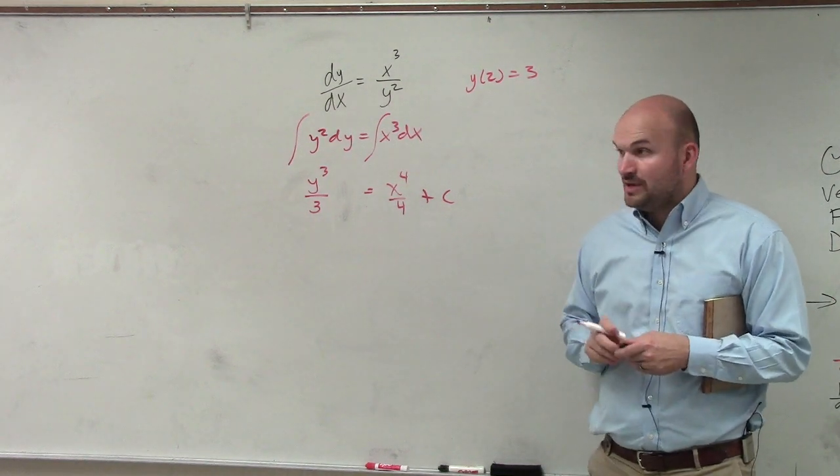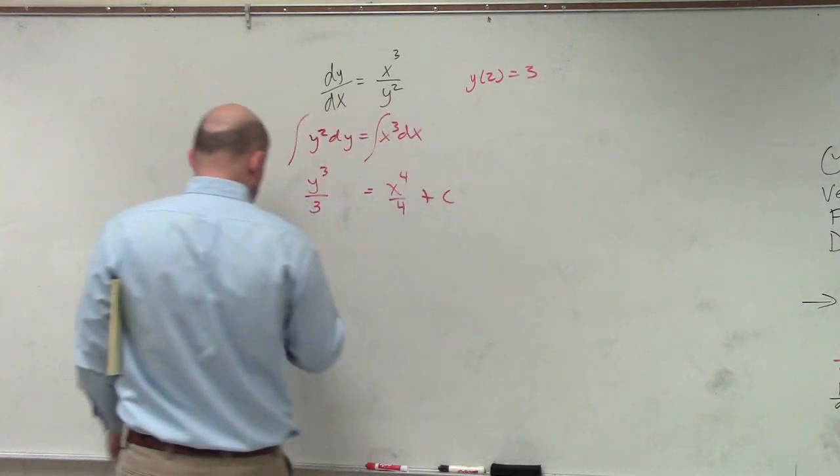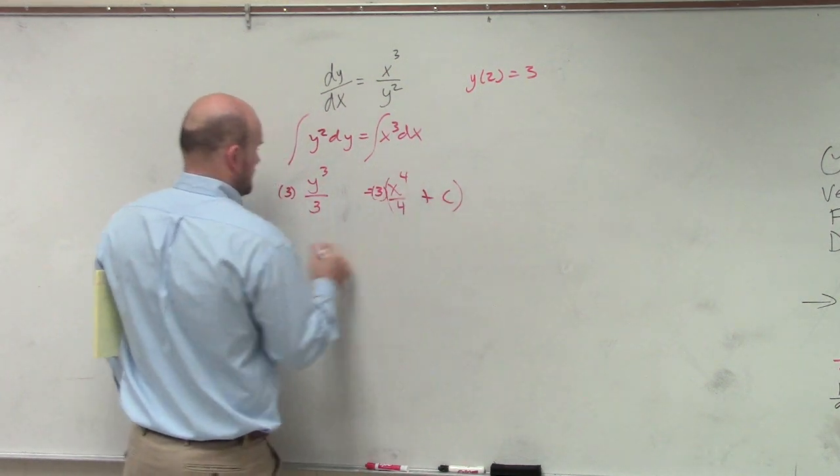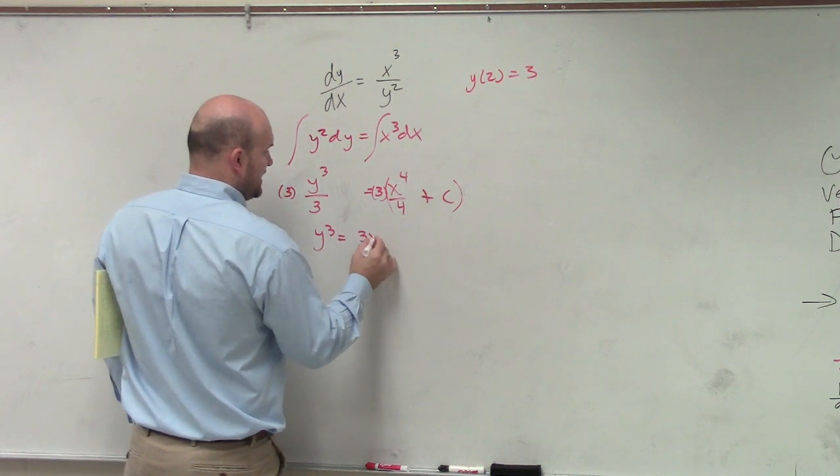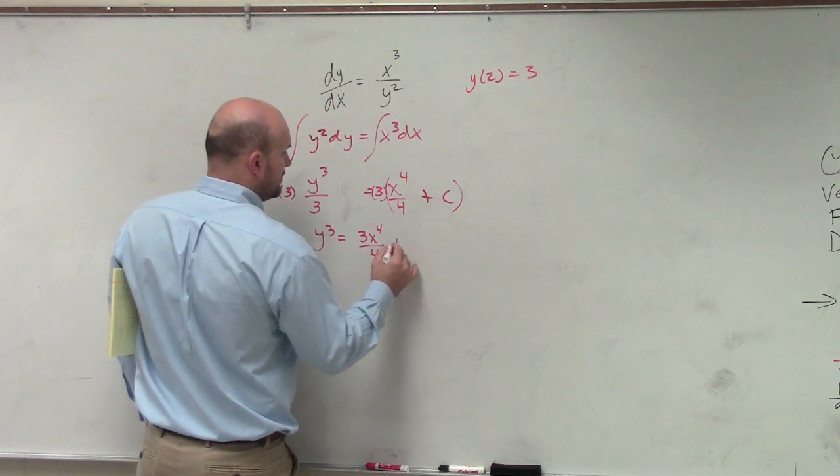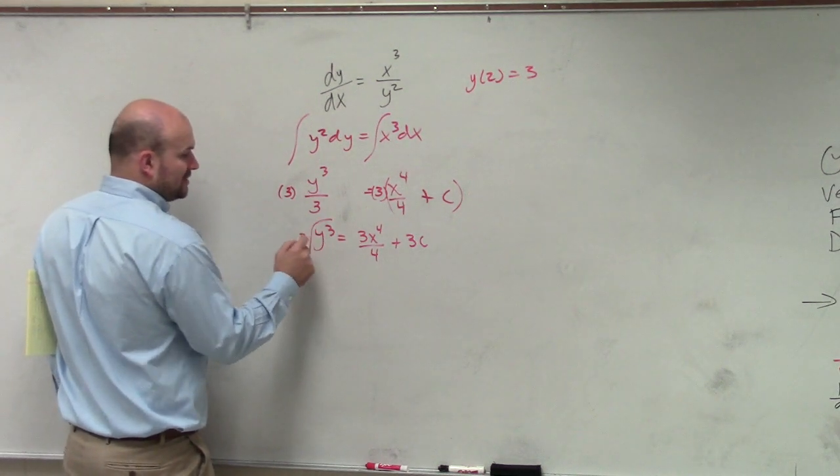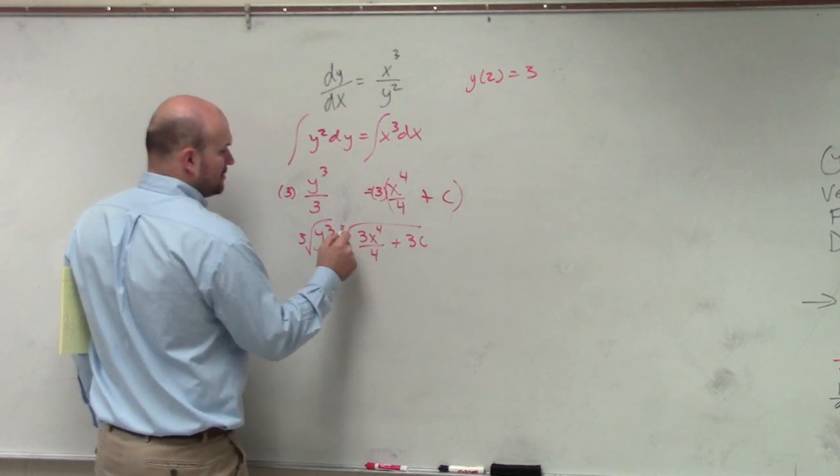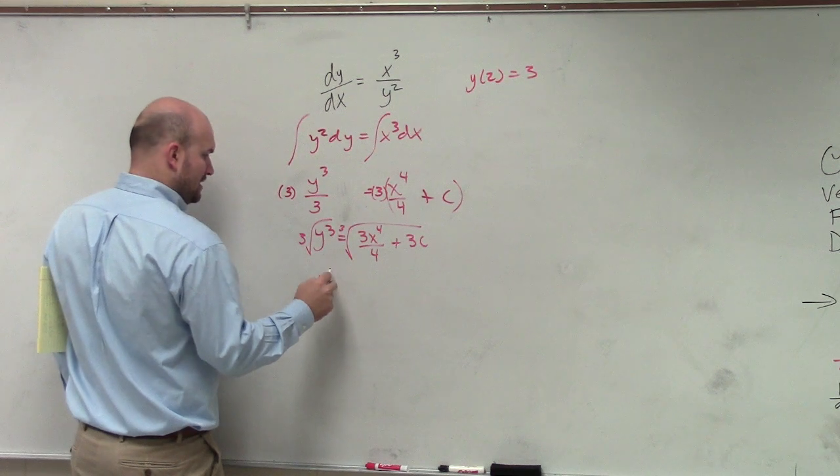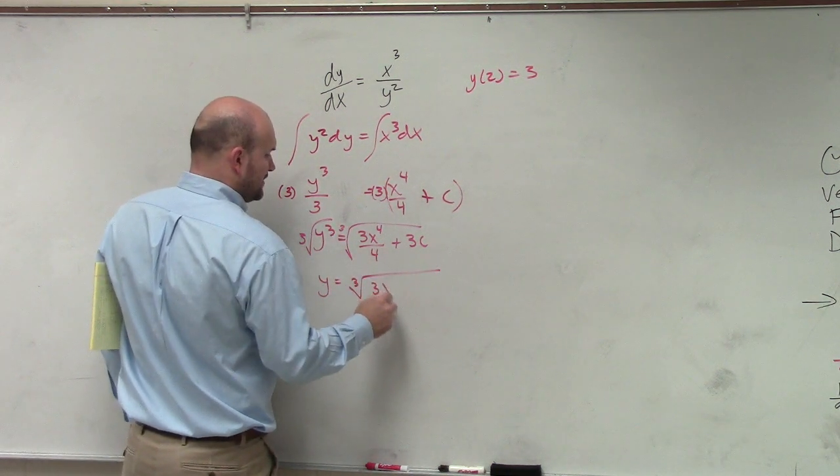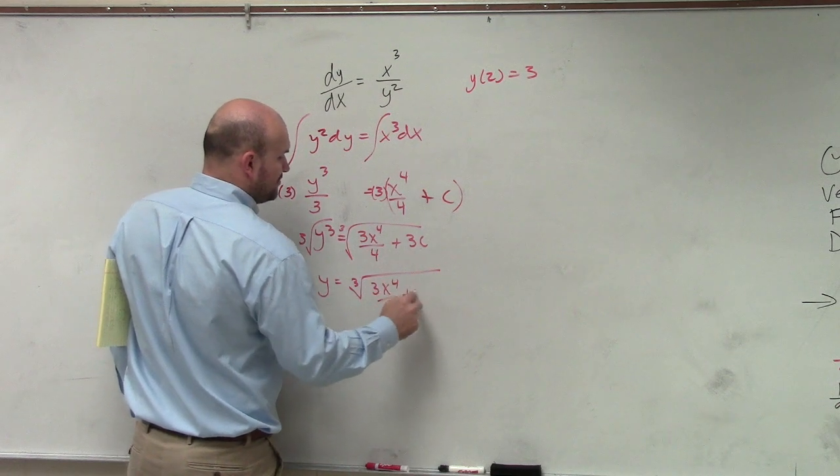Now to go ahead and multiply and figure all this out, we can multiply by 3 on both sides. y cubed equals 3x to the fourth over 4 plus 3c. Undo y cubed by taking the cube root on both sides. y equals the cube root of 3x to the fourth over 4 plus 3c.